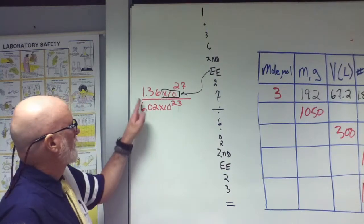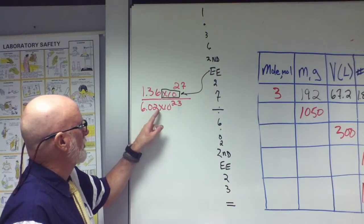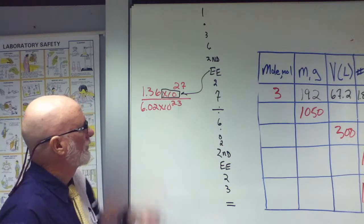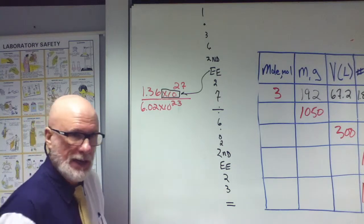And then divided by 6.02 times 10 to the 23rd, EE. There it is again.